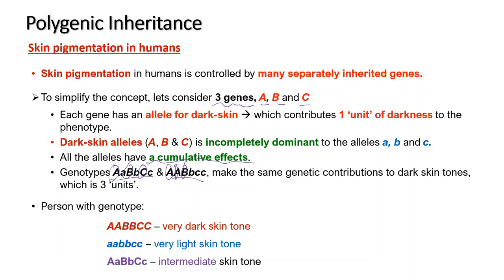Looking at phenotypes: a genotype with 6 capital-letter alleles gives 6 units of darkness — very dark skin tone; 0 capital-letter alleles gives 0 units — very light skin tone; and 3 capital-letter alleles gives 3 units — an intermediate skin tone. In reality, many genes contribute to skin pigmentation, and because this is polygenic inheritance, these genes are sometimes referred to as polygenes.